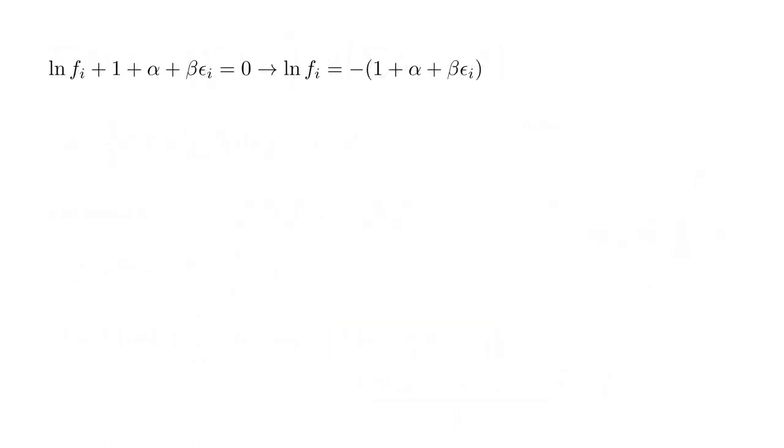This condition tells us ln f_i equals minus quantity one plus alpha plus beta epsilon_i. Taking the exponential function of both sides, we have f_i equals e to the minus one plus alpha plus beta epsilon_i. We separate this into factors: e to the minus one plus alpha times e to the minus beta epsilon_i. And we call the first factor one over Z.